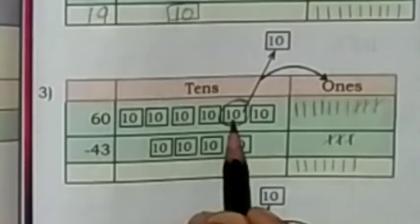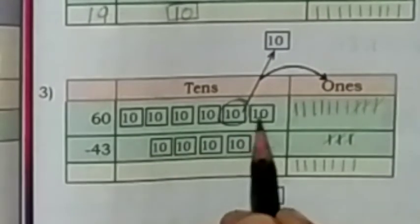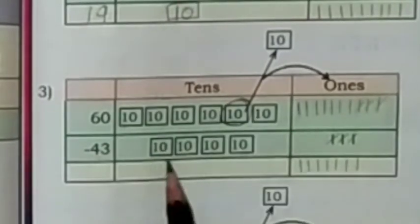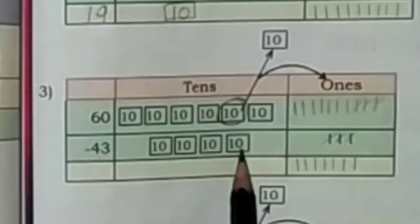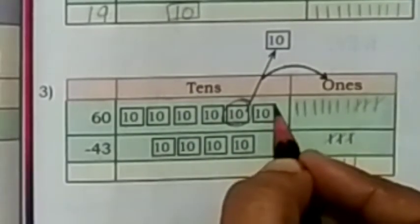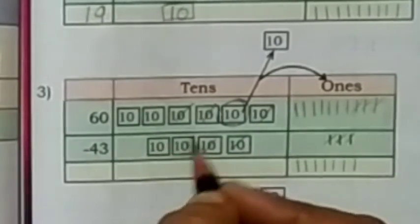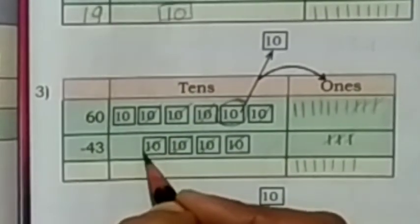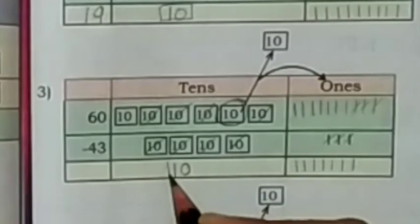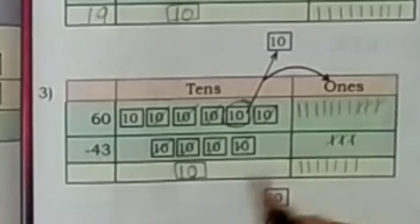Now in the tens place, instead of 6 tens, 5 tens remain. If 4 tens are subtracted from 5 tens, 1 ten remains. The answer is 17.